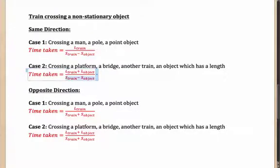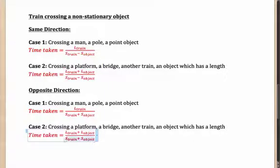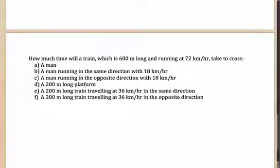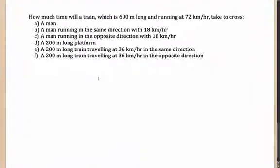When the direction becomes opposite, the speeds get added up. Two bodies moving in opposite directions: their speeds are added. Two bodies moving in the same direction: you use the difference of the speeds. Now let us take an example to clarify this. I request you to pause the video and solve these questions on your own, and only then look at the solution.